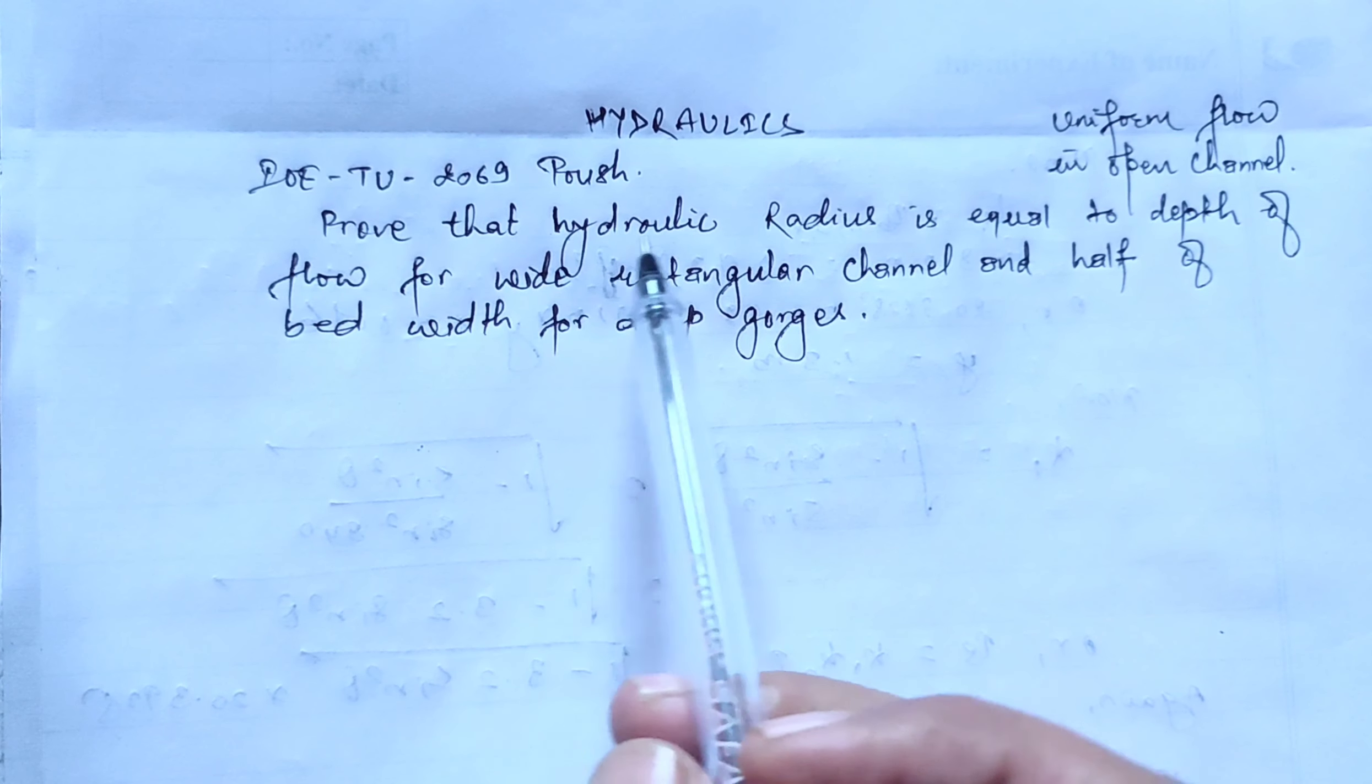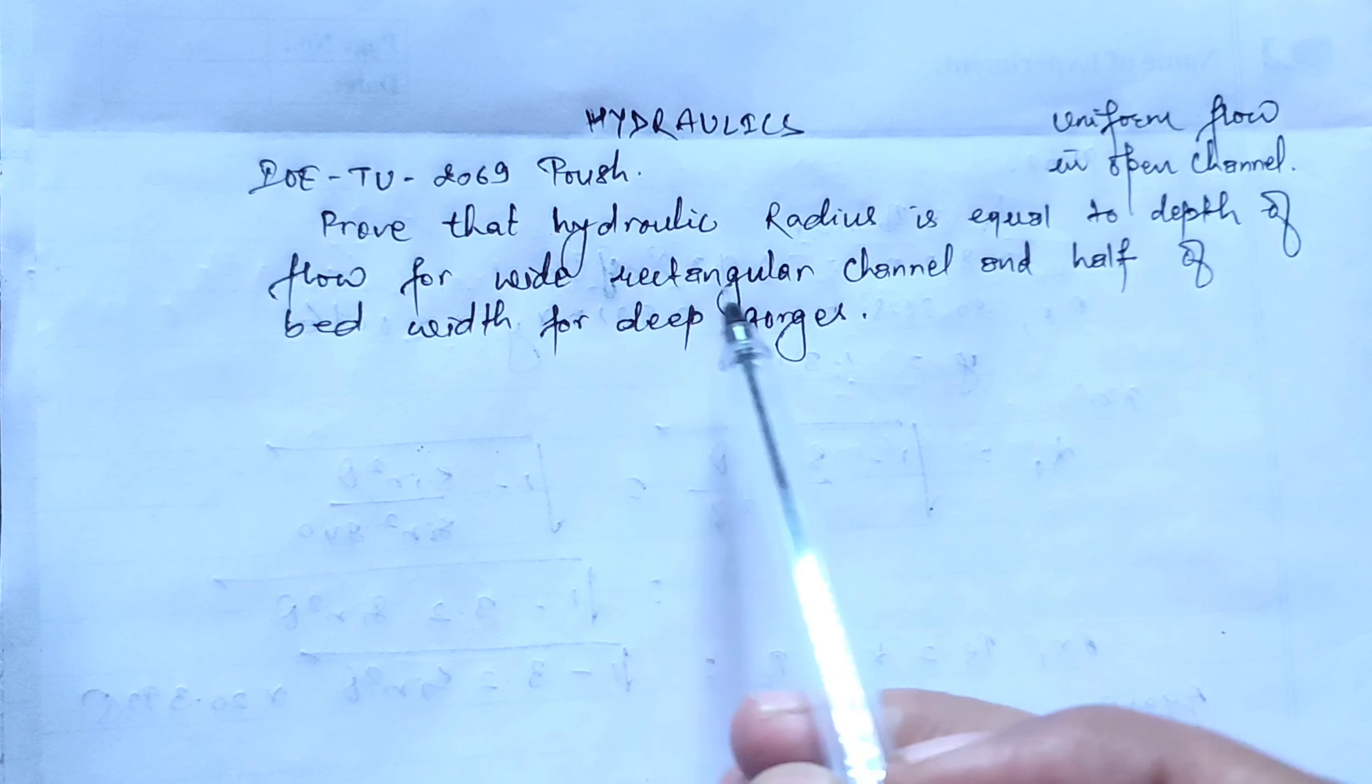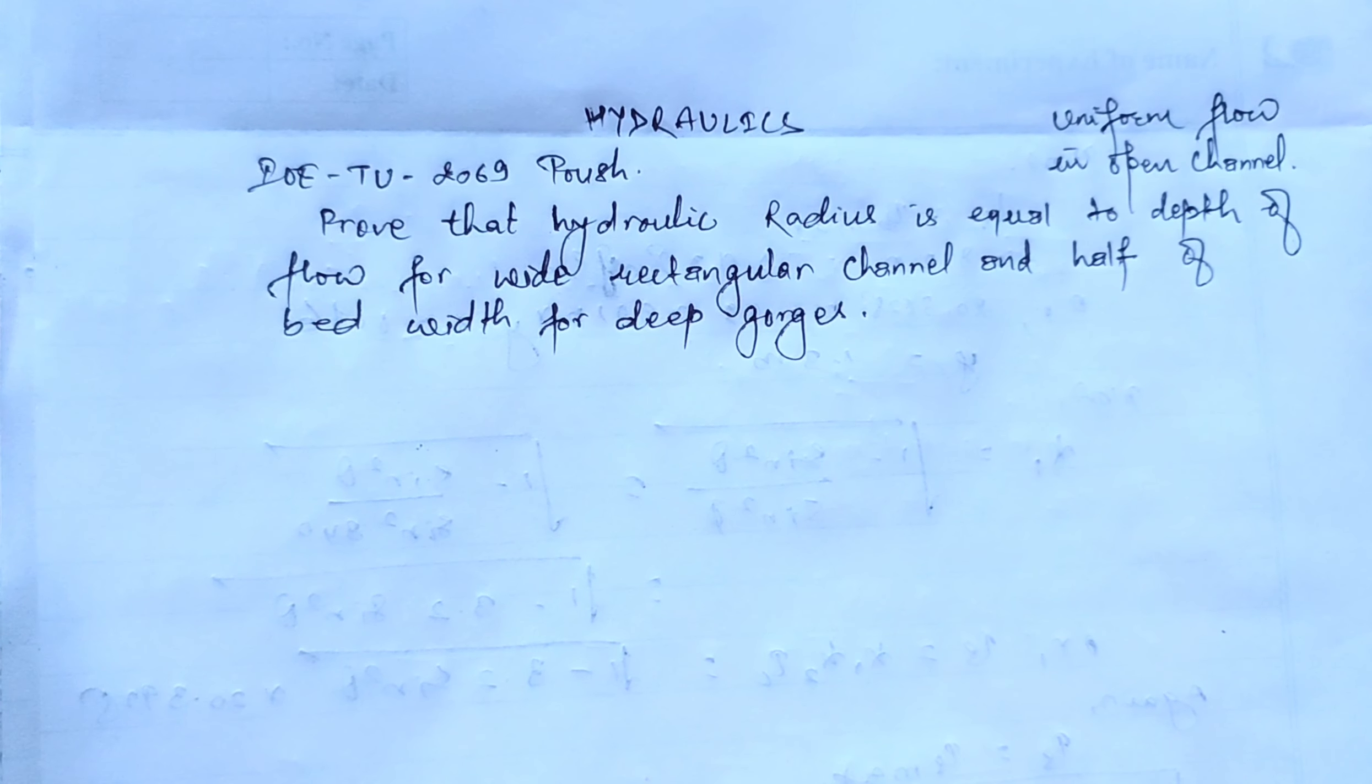The question is: prove that hydraulic radius is equal to the depth of flow for wide rectangular channel and half the bed width for deep gorges.